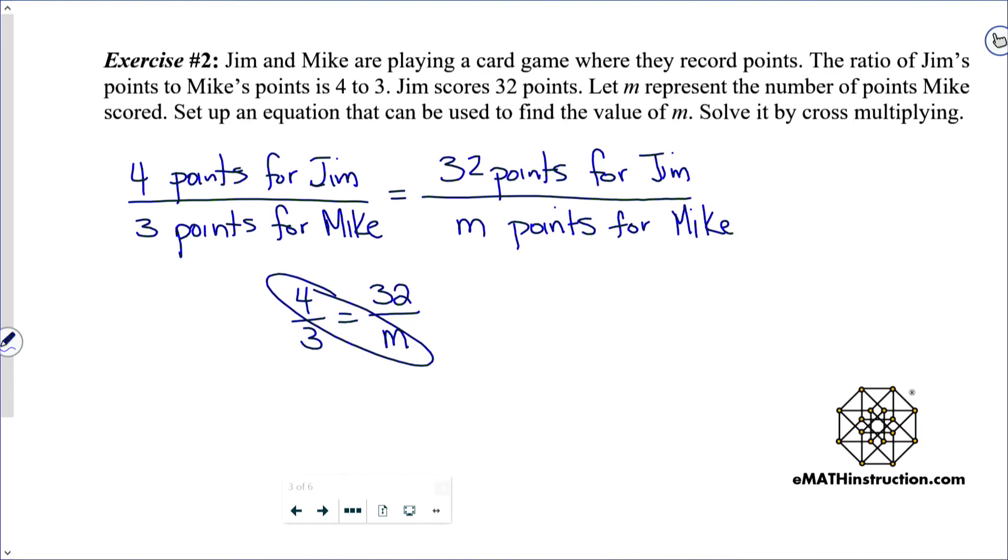At the end of the day, what I now want to solve is 4 thirds equals 32 divided by M. And I want to solve it using cross multiplication. So I'm going to multiply 4 times M and get 4M. And then I'm going to multiply 3 times 32 and get 96. Then I'm going to divide both sides by 4, and I end up getting M equals 24. So Mike scores 24 points.